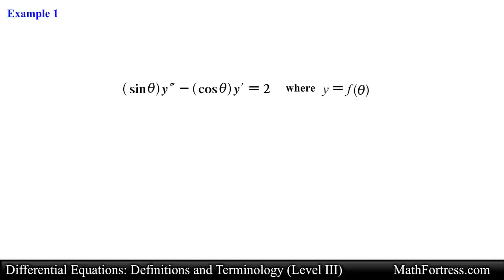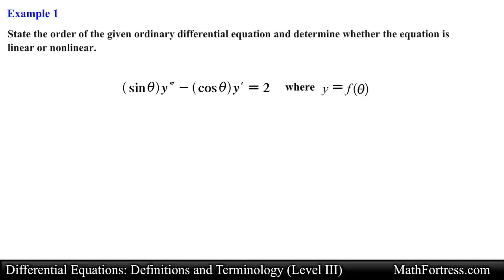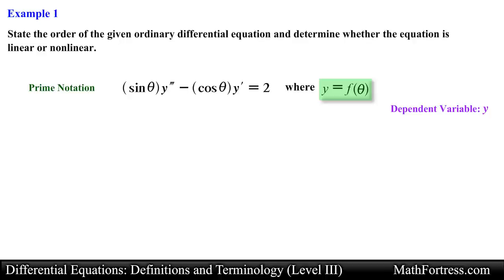Let's jump straight into the first example: sine of theta times y triple prime minus cosine of theta times y prime equals 2, where y is a function of theta. Notice that this differential equation is written using prime notation, and we are told that y is a function of theta.